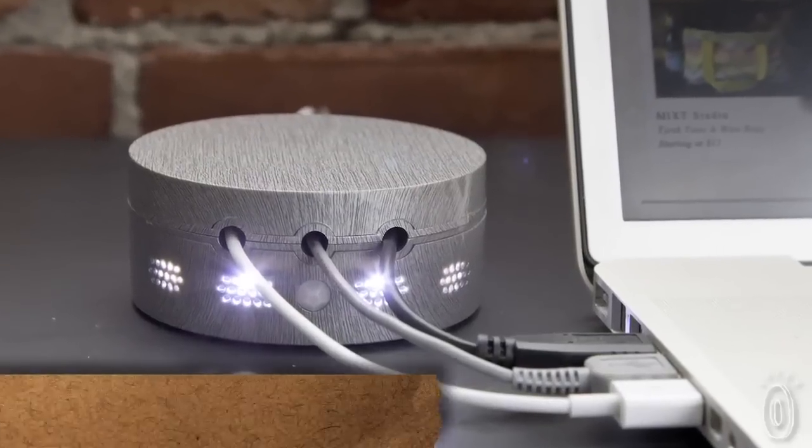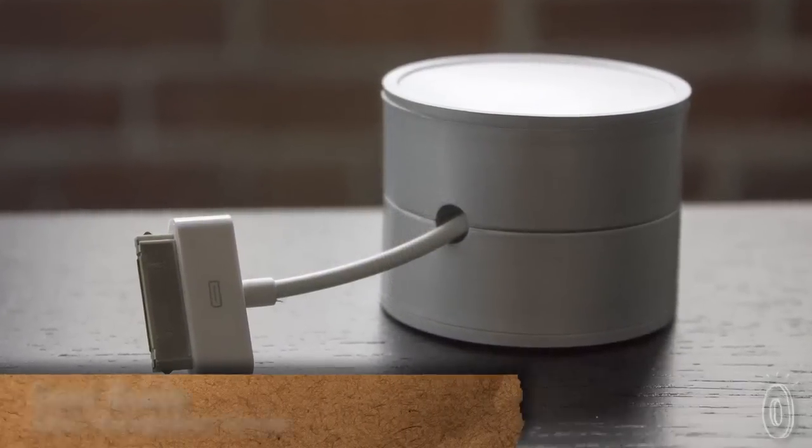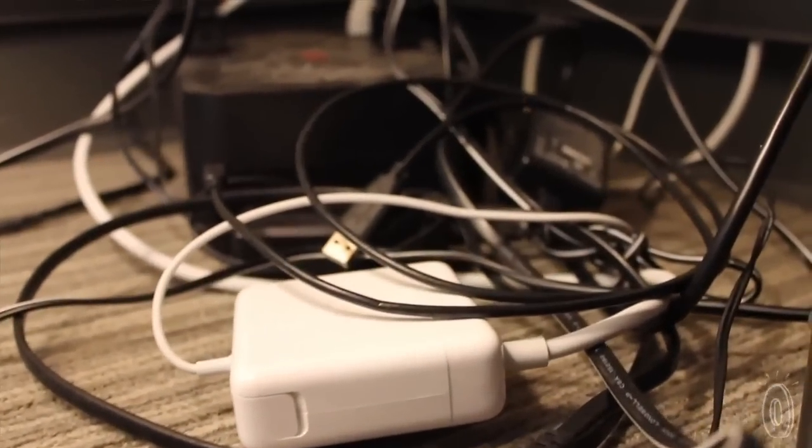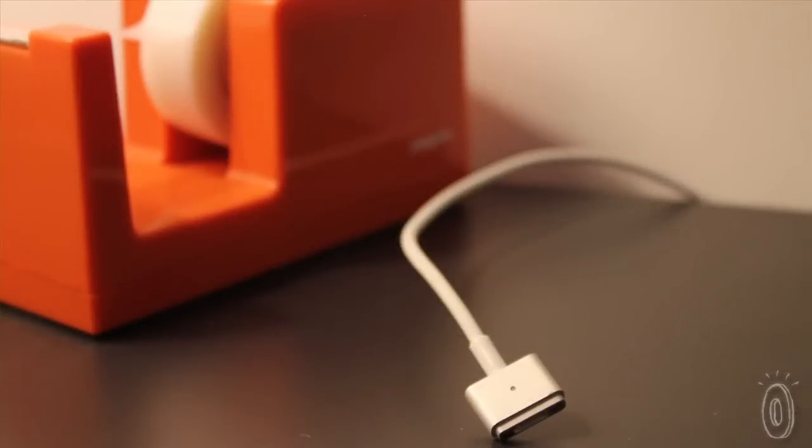There's no question that cords are an unavoidable annoyance of our times, but the Cord Buddy secures and organizes the cords for all your gadgets so you won't have to go around searching for them. Cords, cables, charging devices, monitor and software connections—whether it's at my desk or on my nightstand, they always fall behind the furniture and get lost.